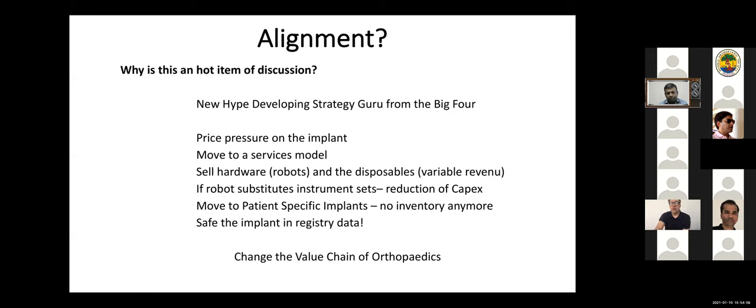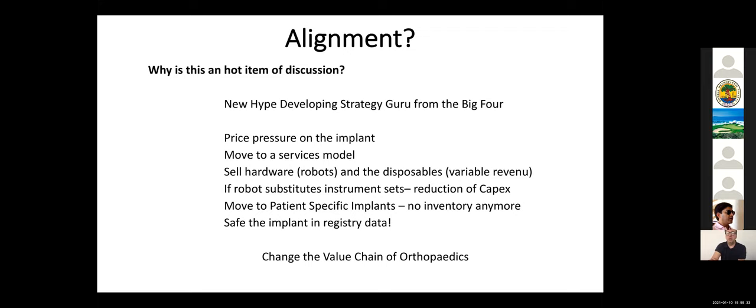Now I believe that somewhere out there, and I had never the pleasure to meet him, there is a big guru that decides which is the new hype, and he decides that for the big four, and then we all run in the same way. Why is this happening today? Well, there is price pressure on the implant, so the companies decided to move to a services model. It's better to sell hardware, robots, and the disposables, which gives you a variable revenue. If the robot substitutes the instrument sets, then you have a reduction of CAPEX. And this is to Arun, the big discussion between navigation and robot is that as long as you use navigation, the companies still have to give you your instrument sets, and this is sleeping money in your hospital. So they prefer guys who use the robot, which will be a simple instrument. Only the robot is there, no longer the metallic instruments on the shelf,